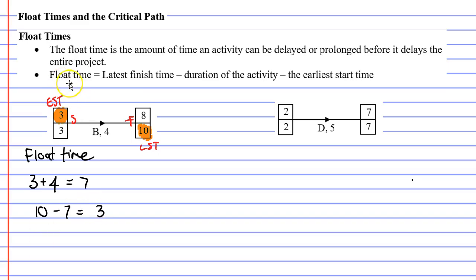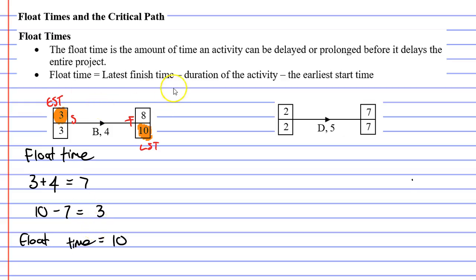There is a formula you can use to calculate the float time. To find the float time for the plumber — which we know is three — first we take the latest finish time, which is 10. It's the latest start time for the next activity, but it's also the latest finish time for activity B. Then we subtract the duration of the activity, which is four hours. Finally, we subtract the earliest start time, which was three. So 10 minus 4 minus 3 gives us a float time of three.